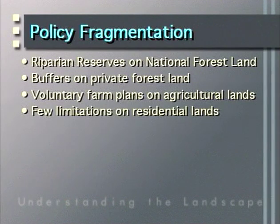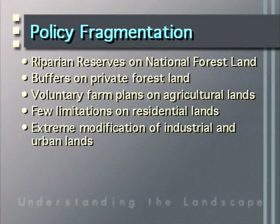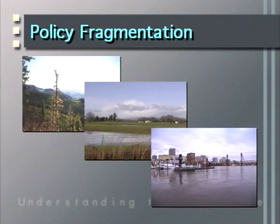Livestock can be in the middle of the creek legally. Moving off agricultural lands onto residential lands, a private owner can cut down riparian vegetation and plant flowers right next to the stream, and it's still legal. On industrial and urban lands, you can essentially pave the stream and create a concrete channel. So on the same landscape we have fragmented policy — from extensive protection on public forest lands to essentially no protection on urban lands — creating a fragmented landscape.